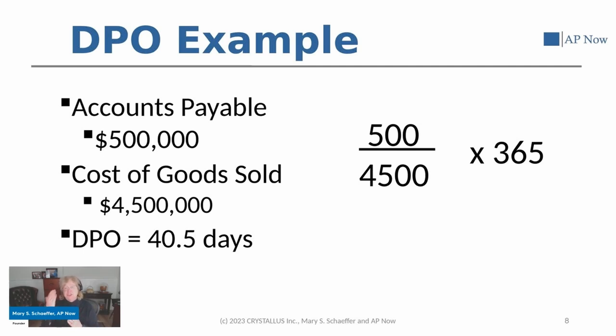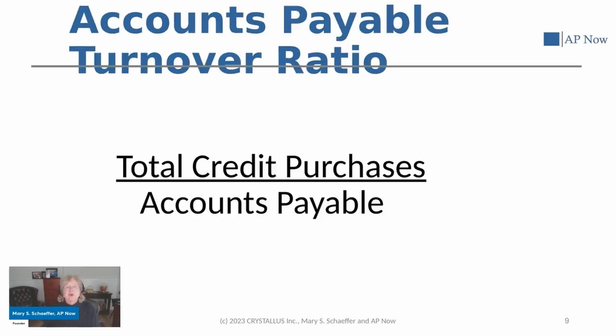Sometimes analysts will compare your DPO this year to the prior year to see if you're getting longer or shorter. Also keep in mind, this is the actual mathematical calculation, but sometimes you'll see financial folks use 360 instead of 365. They do this in a lot of their financial transactions.